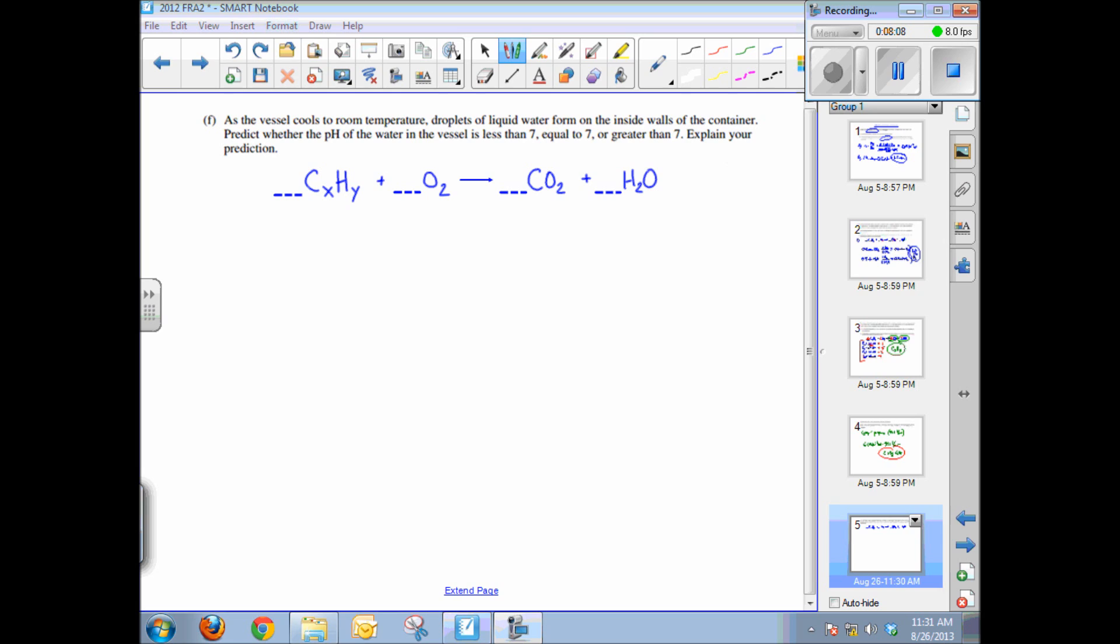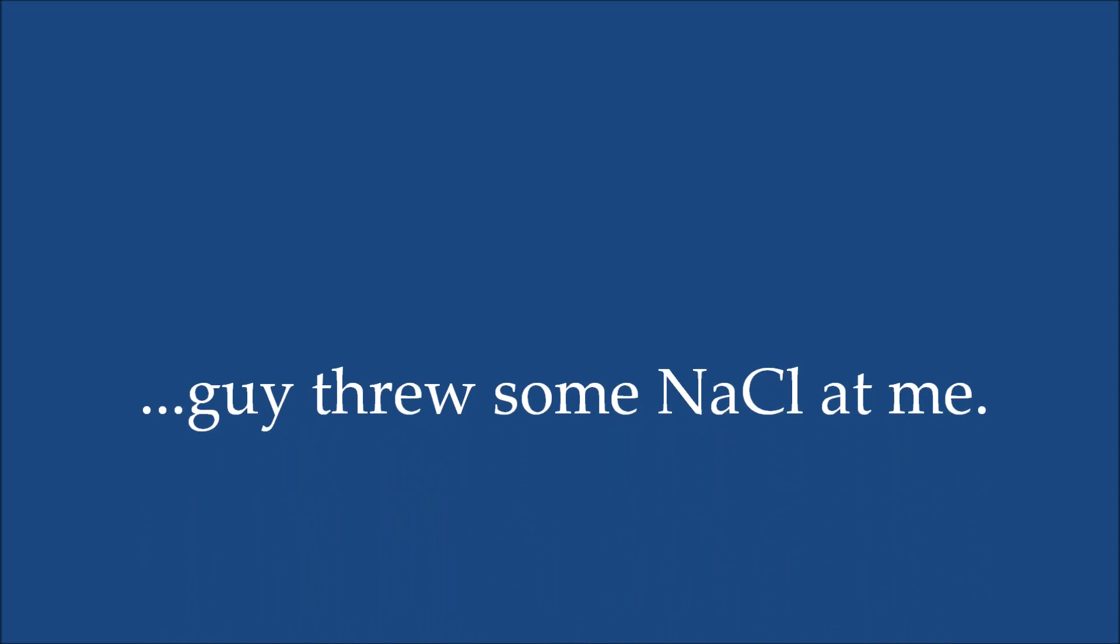The final part of this problem asks or states that as the vessel cools, droplets of water condense inside of the container. That makes sense. Predict the pH of the water in the vessel. Is it less than, equal to, or greater than seven? Well, notice one of the products of the combustion of a hydrocarbon is CO2 gas. And when carbon dioxide dissolves in water vapor that's condensing on the walls of the container, you get carbonic acid, H2CO3, which will further dissociate into H plus and the bicarbonate ion. So you've got an acidic product in solution, in the droplets of water, as the water condenses. And so the pH, of course, is less than seven. So your answer should state the pH is less than seven because carbon dioxide will dissolve in the condensed water vapor, forming an acidic product yielding hydrogen ions, or something to that effect.